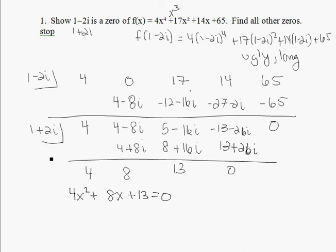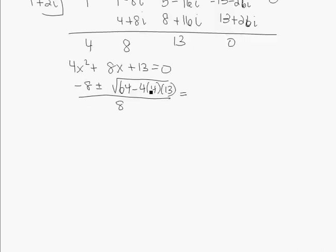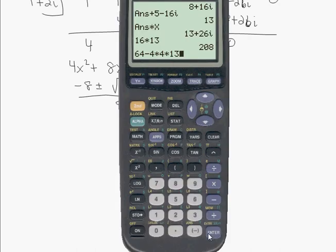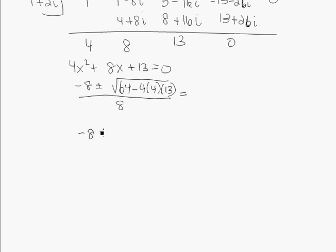So we know 1 minus 2i is a root. 1 plus 2i is a root. Now we need to find the final root. So what are the roots of this quadratic here. I'm going to go with this is not factorable, so I'm going to do the quadratic formula. That's negative 8 plus or minus the square root. Let's do 64 minus 4 times 4 times 13, which is negative 144.